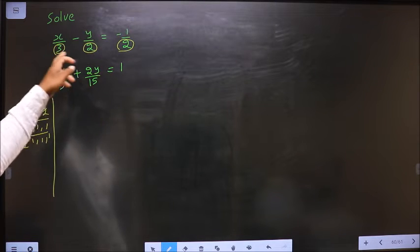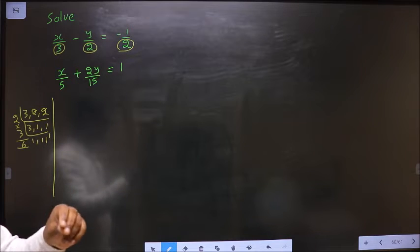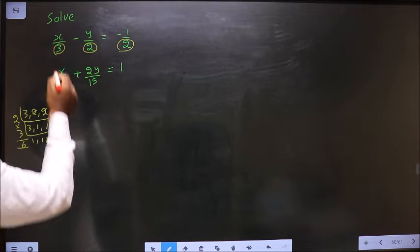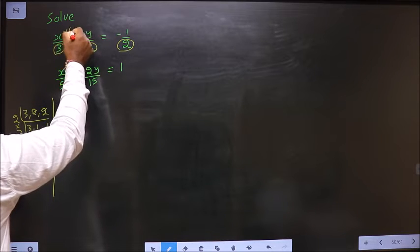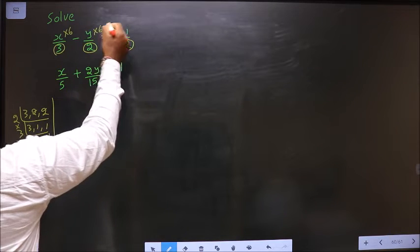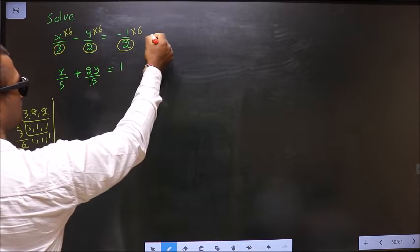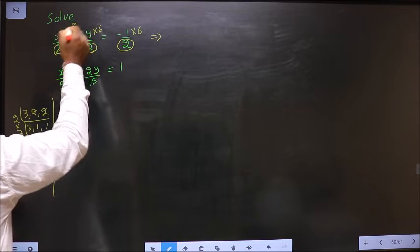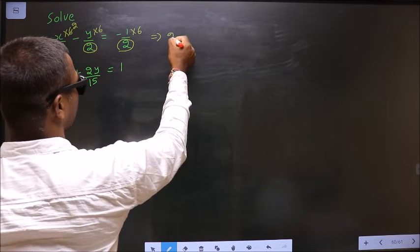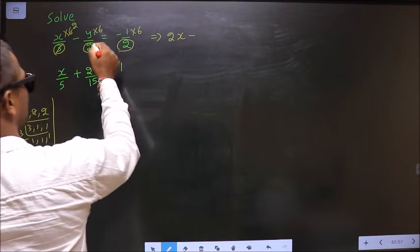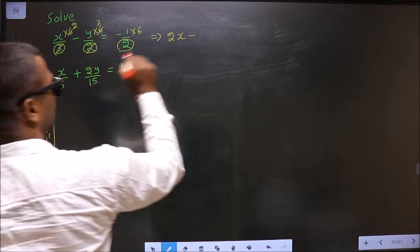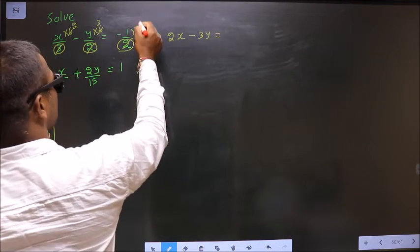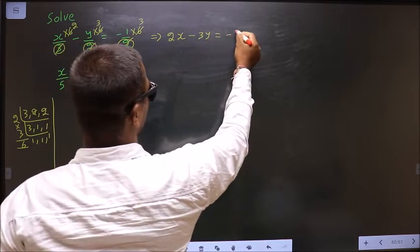So now to get rid of the denominators, we should multiply with 6 to each term. Into 6, into 6, into 6. So what do we get? 3 ones, 3 twos. So we get 2x minus 2 ones, 2 threes. 3y equal to 2 ones, 2 threes. So minus 3.